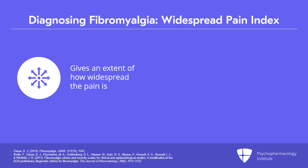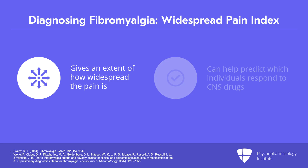The body map alone will help predict, for example, which individuals with low back pain or osteoarthritis respond to a drug like duloxetine that is working in the amplifier in the central nervous system.